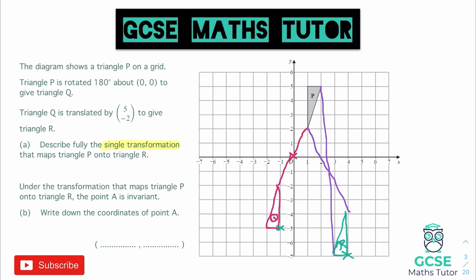For the description, we write that it is a rotation of 180 degrees. Remember, with 180 degrees we don't need to state the direction — clockwise or anti-clockwise are both fine. Then you say 'about the point' and state that coordinate. So it's a 180 degree rotation around the point (2.5, -1) — a bit of a strange one with a decimal, but that describes our single transformation. You could also say it is an enlargement about the point (2.5, -1) with a scale factor of negative 1. So that is your other option.